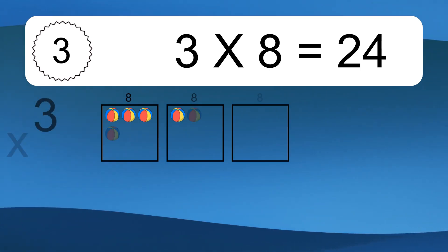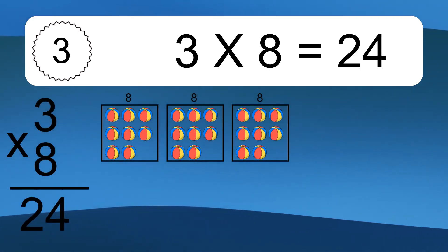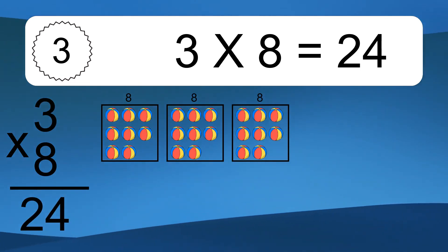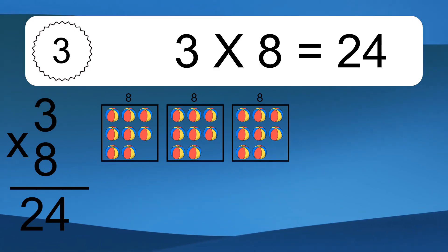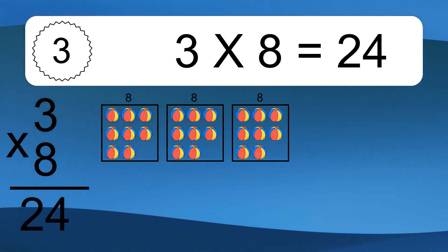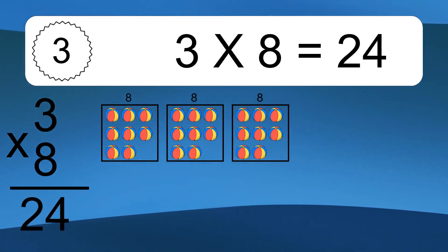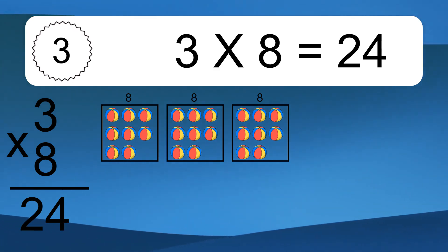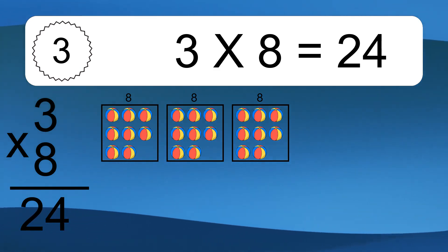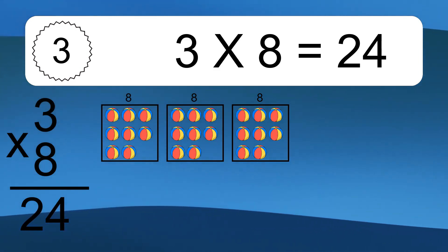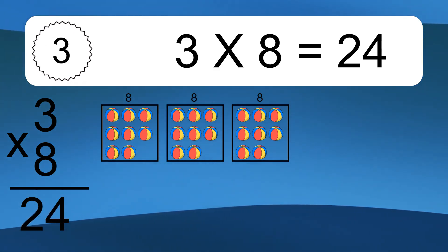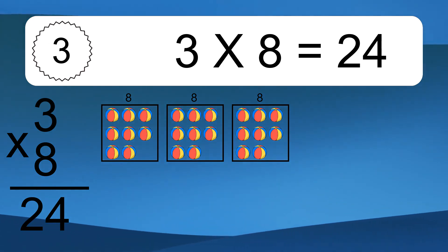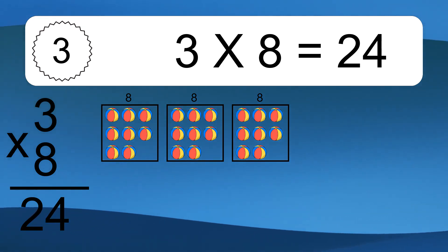3 times 8 equals what? 3 times 8 equals 24. We have 3 boxes, and each box has 8 colorful balls inside. If you count all the balls in all the boxes together, you will have 3 times 8 balls. This equals 24 balls.